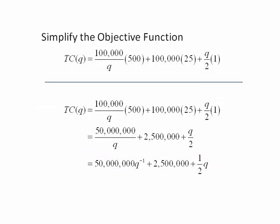The sum of these costs are the total cost. It can be simplified to give 50,000,000 times Q to the negative 1, plus 2,500,000, plus 1 half times Q.